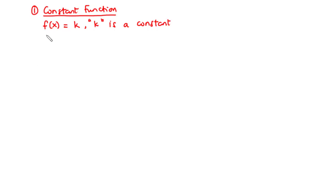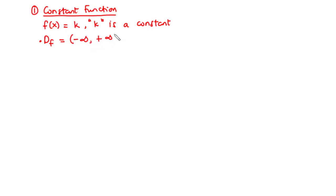Notice that f of x remains as k, irrespective of the value of x. So what this primarily means is that the value of x can change; however, f of x still remains as k. Since this function is defined for all values of x, the domain of a constant function is the set of all real numbers, that is from negative infinity through to positive infinity. And the range of a constant function is the set that contains the single element k.